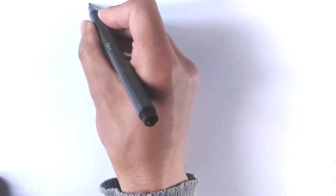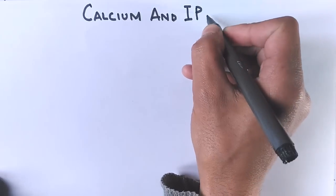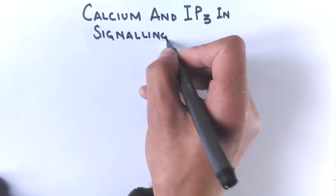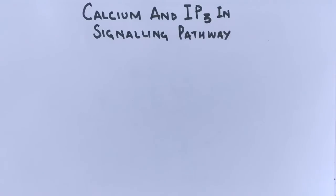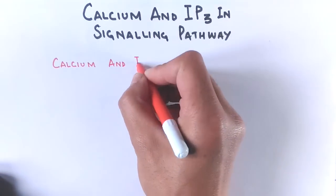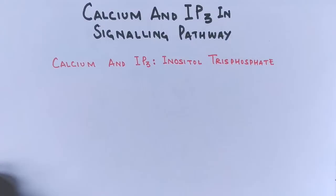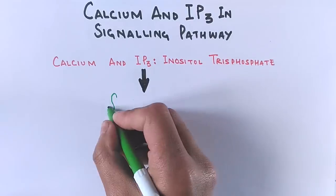Hello friends, in this video we will be discussing the role of calcium and IP3 in signaling pathway. IP3 here is inositol trisphosphate. Calcium and IP3, that's inositol trisphosphate, both are second messengers.